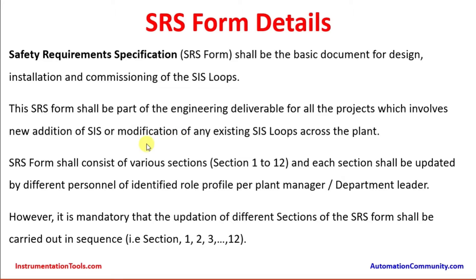The SRS is required for all safety instrumented systems available across the plant in different subsections, and whenever any existing facility is upgraded with a new safety instrumented system loop. The SRS form shall consist of various sections — section 1 to 12 — and each section shall be updated by different personnel of identified role profiles per plant manager and department leader, in sequence from section 1 through 12. All the relevant information needed for the safety instrumented system, to maintain its healthiness and life cycle, will be detailed in the SRS form.